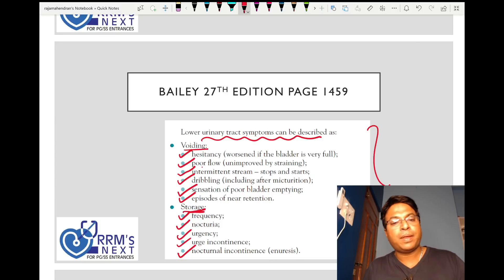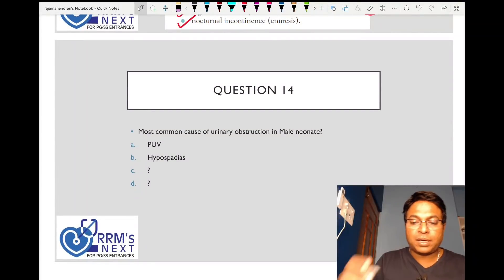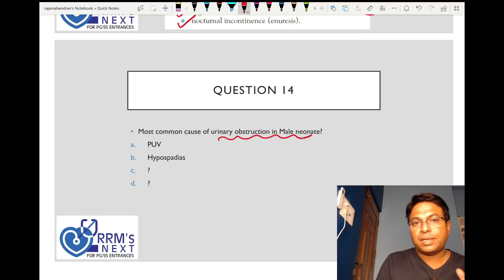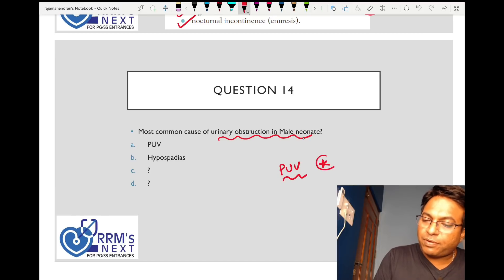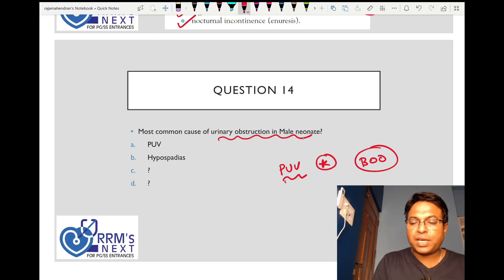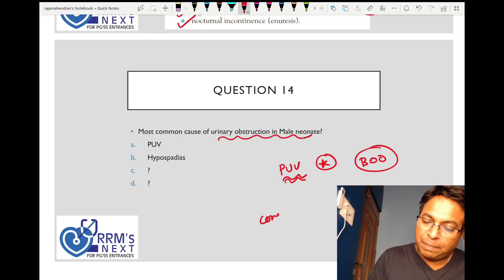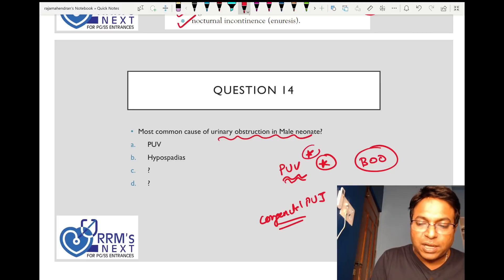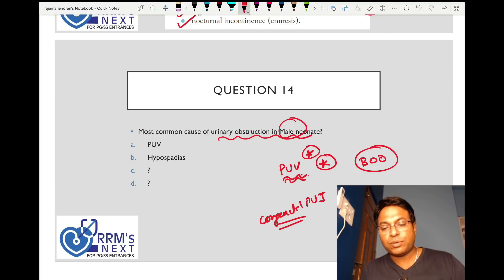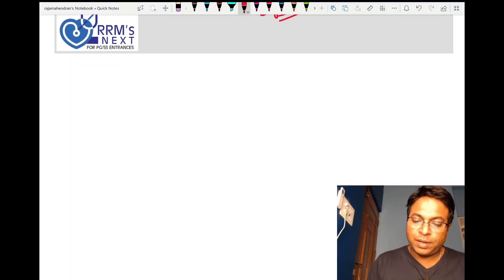Most common cause of urinary obstruction in male neonate. The most common cause of urinary obstruction in male babies is posterior urethral valve, the most common cause of bladder outlet obstruction. Another cause is congenital pelviureteric junction obstruction. If both are there, go for posterior urethral valve as the best answer for male babies.